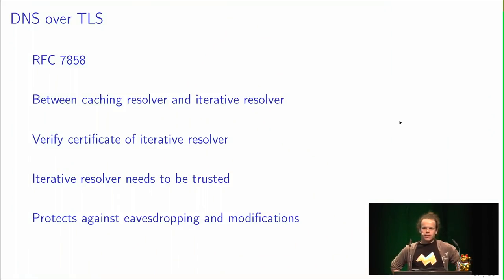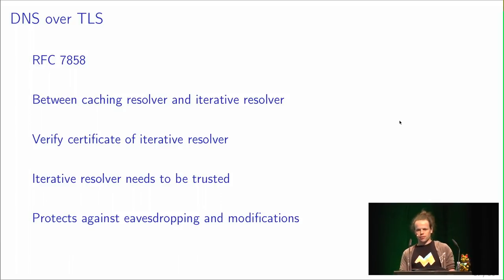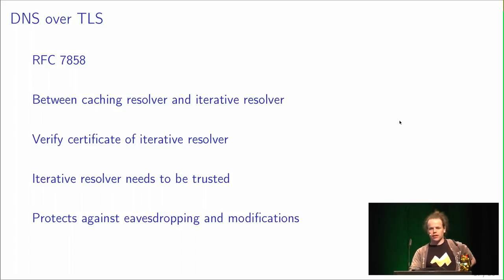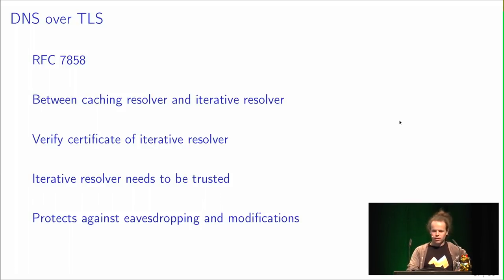DNS over TLS is a privacy enhancement specified in RFC 7858. It's a connection between the caching resolver and the iterative resolver — for example, between your router and the ISP's iterative resolver. You verify the certificate of the iterative resolver to avoid man-in-the-middle attacks. It protects against eavesdropping and modifications. If you're in a country where DNS is censored, DNS over TLS lets you connect to a trusted remote server in another country.